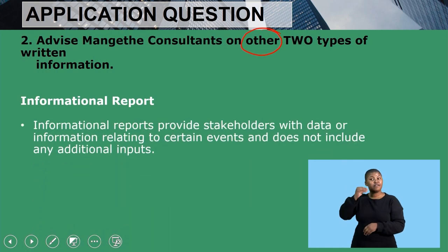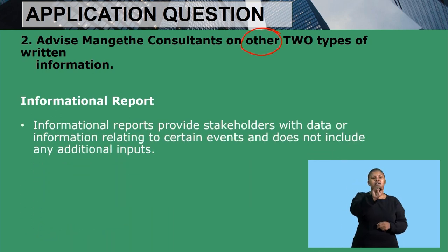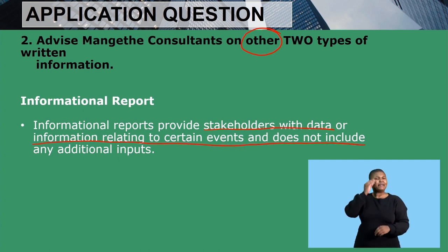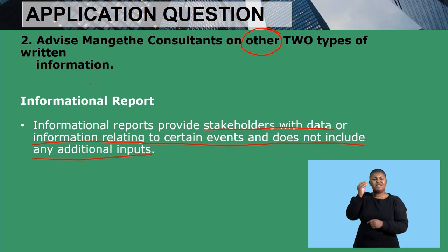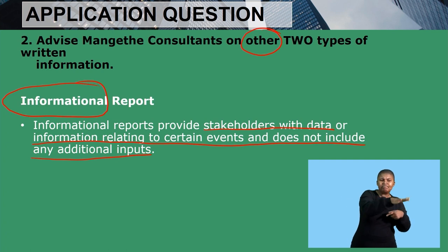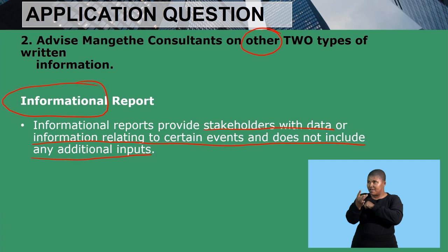The first type is informational reports. Informational reports provide stakeholders with data or information relating to certain events and do not include any additional inputs. These reports are about informing stakeholders — rather than wanting feedback or ideas from them — about certain events or activities that took place in the business.